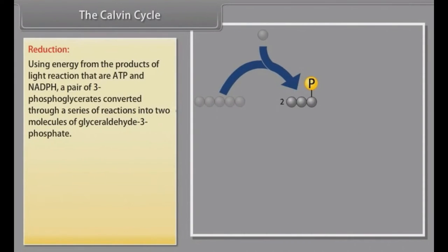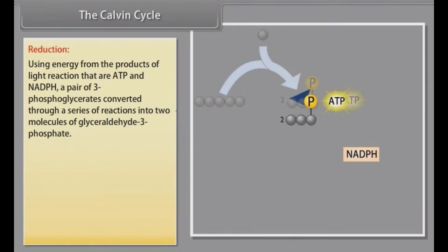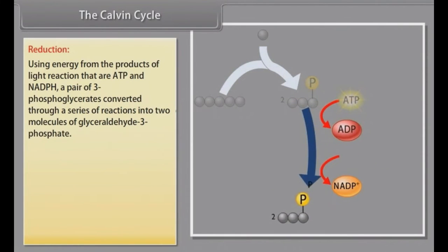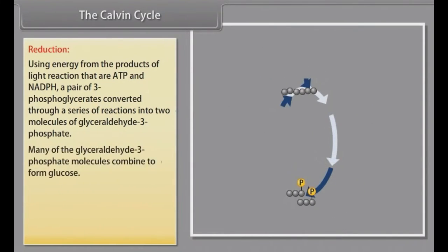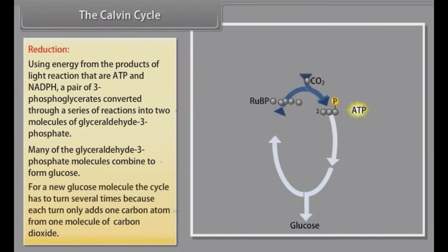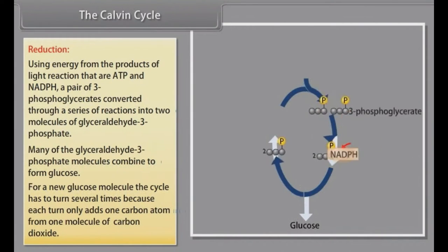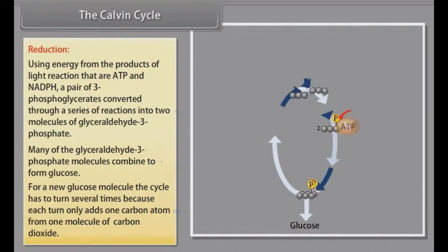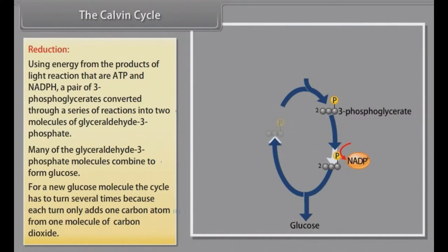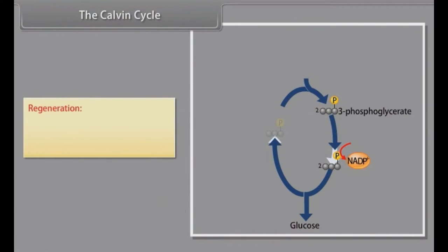Reduction: Using energy from the products of light reaction, that are ATP and NADPH, a pair of 3-phosphoglycerates are converted through a series of reactions into 2 molecules of glyceraldehyde-3-phosphate. Many of the glyceraldehyde-3-phosphate molecules combine to form glucose. For a new glucose molecule, the cycle has to turn several times because each turn only adds one carbon atom from one molecule of carbon dioxide. Regeneration: Regeneration of molecule of RUBP is vital to have uninterrupted Calvin cycle.